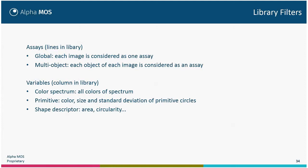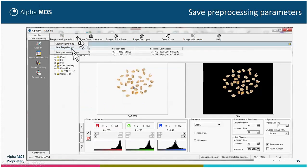The variables — columns in the library — can be color spectrum (the proportion of color in one image or object), primitives (the color size and standard deviation of the primitive circle, only for Global), and shape descriptors (area, circularity, height, width, etc.). In order to have a library, you will have to save your pre-processing parameters. After selecting the threshold values, data type, filter, primitives, and spectrum, you can save it using Pre-processing > Save Data > Save Prep Method, and build the library.